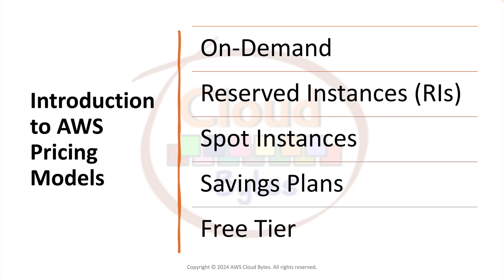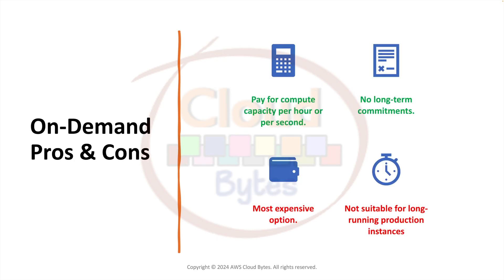Let's look at the various pricing models that AWS provides. We can categorize them as on-demand, reserved instances (also called RIs), spot instances, savings plan, and free tier. These are the five high-level categories we're going to talk about for AWS pricing models.